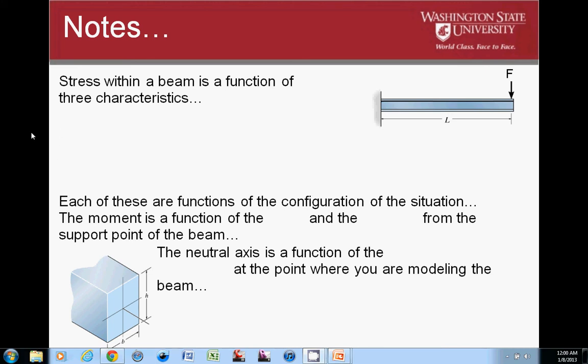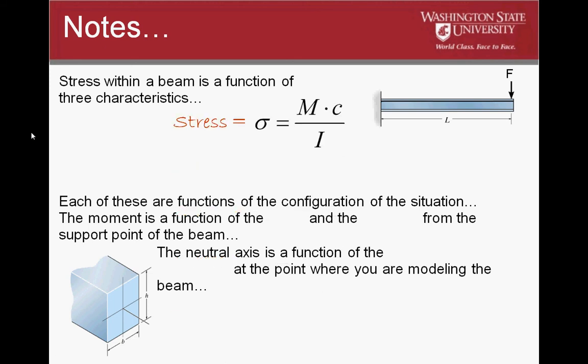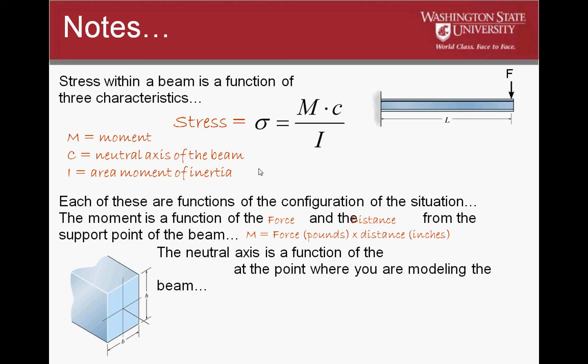Stress within a beam is a function of three different characteristics. Those characteristics are moment, neutral axis of the beam, and the area moment of inertia. So if we look at stress, this is the formula for stress: MC over I. It would be my opinion that this is a formula worth memorizing. It's something that you will use in all engineering disciplines, not just civil engineering. Each of these functions of the configuration for this particular situation can be described as follows. The moment is a function of the force and the distance from the support of the beam. The way we calculate moment is force times distance. We have a force out here at distance L, so to calculate the value for M, we take the amount of force and multiply that by the length of our beam. That will give us our moment.